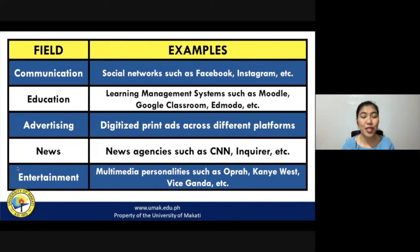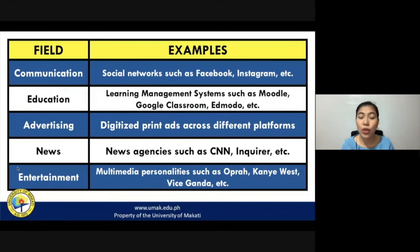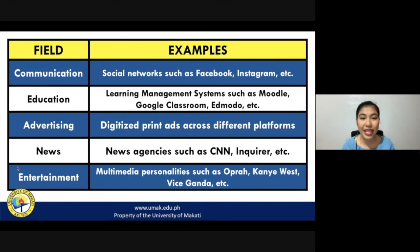Here are some other examples of media convergence in different fields. In the field of communication, social networking sites such as Facebook and Instagram are products of media convergence — you can message people, connect, share information, pictures, videos, and updates. In the field of education, learning management systems such as Moodle, Google Classroom, and Edmodo are examples, especially relevant now that we are engaged in online distance learning. In the field of advertising, digitized print ads across different platforms are examples of media convergence, as these ads can now run on multiple kinds of media.